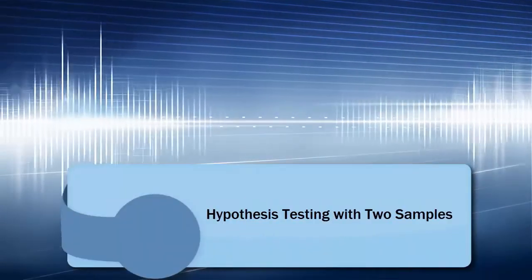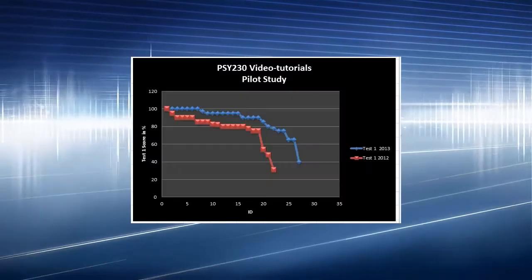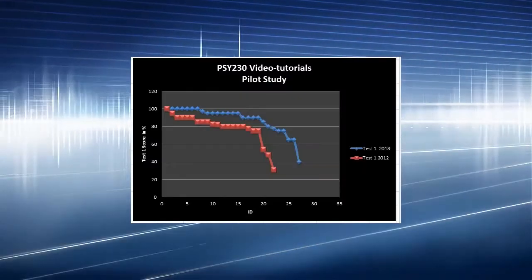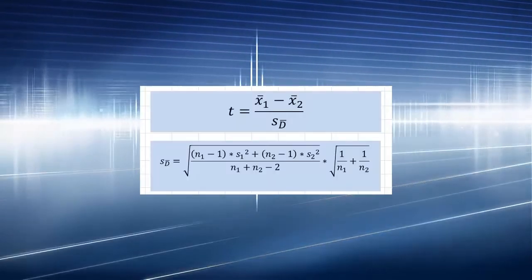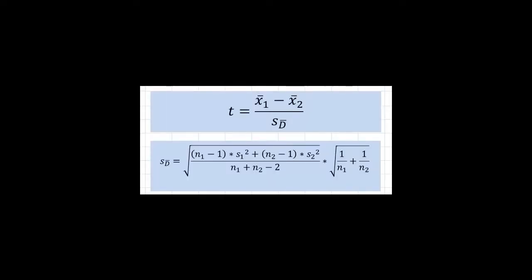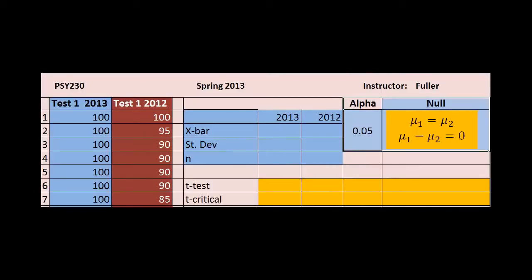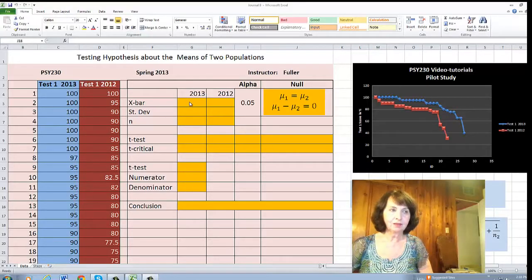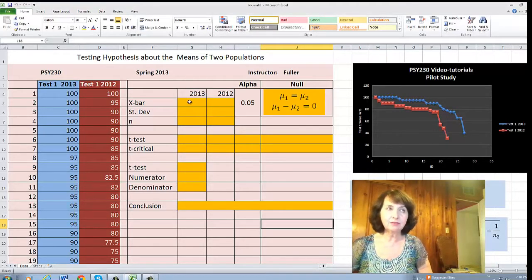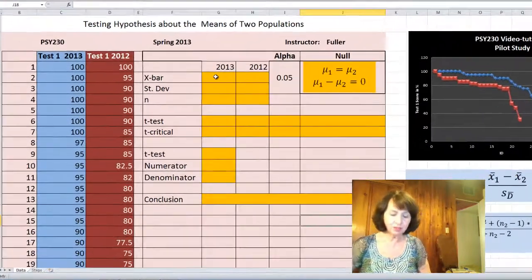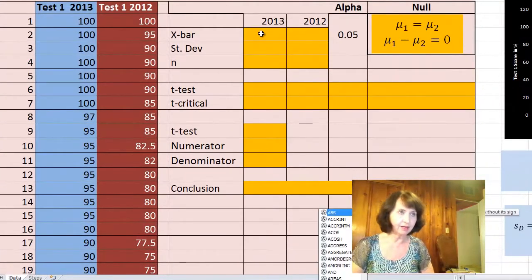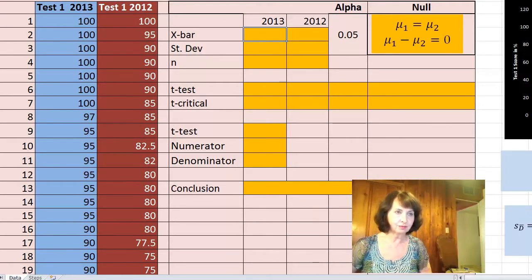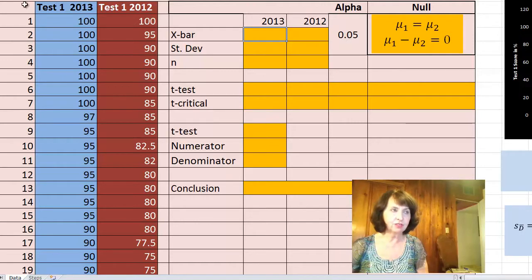Welcome. To test a hypothesis about the difference of the means of two populations, first we have to calculate the average of the two tests.